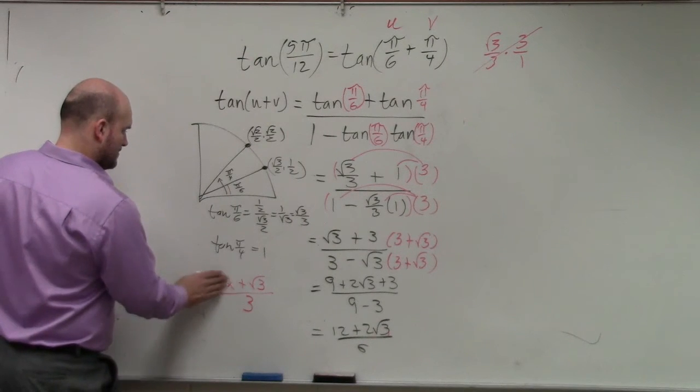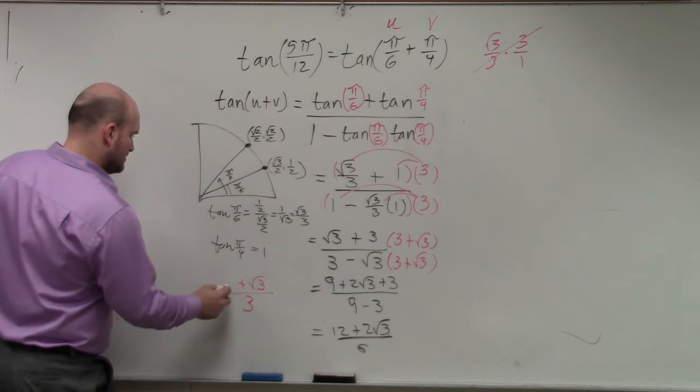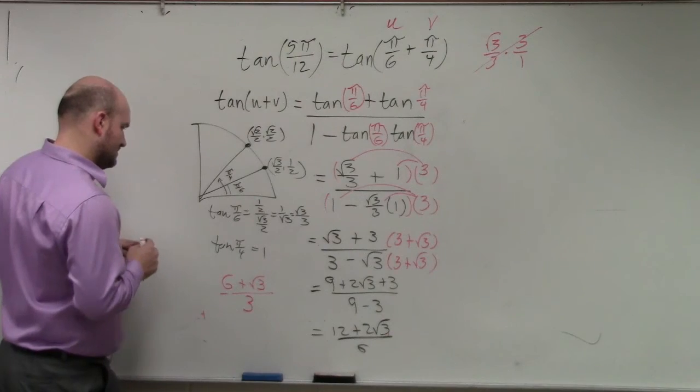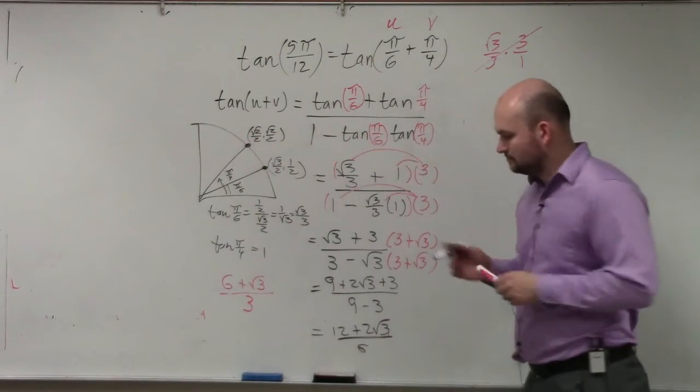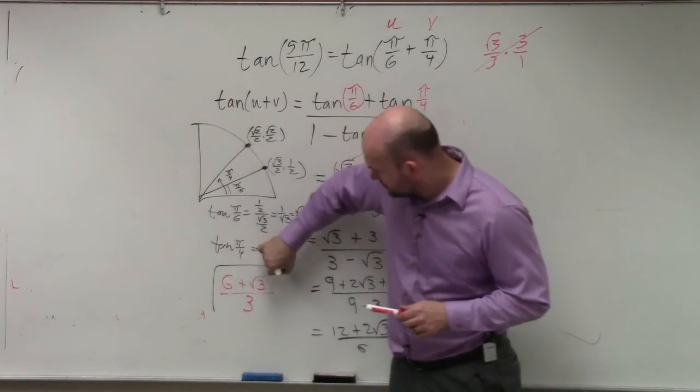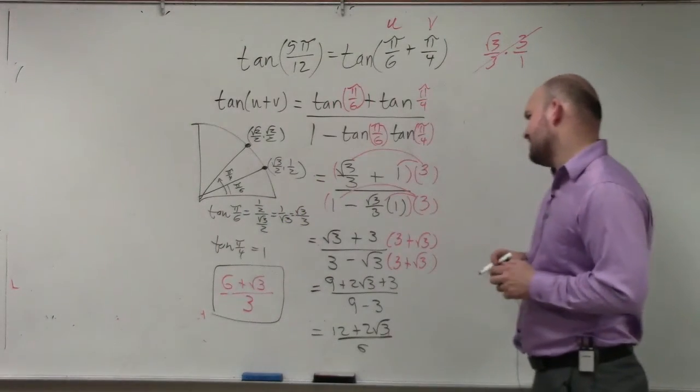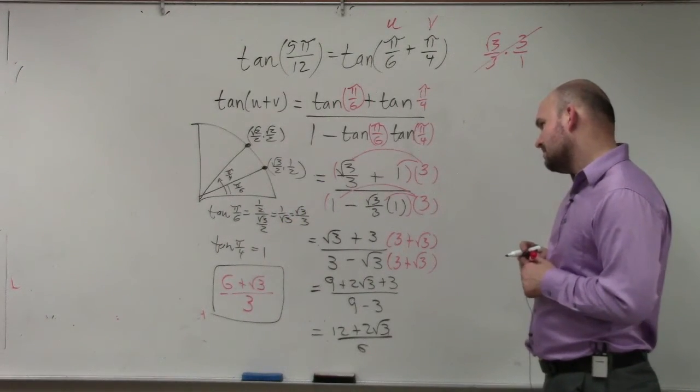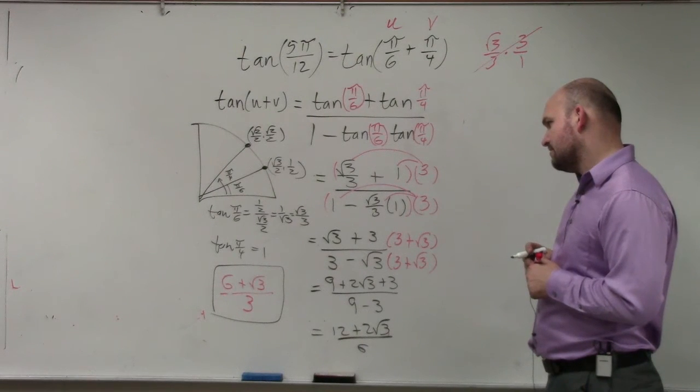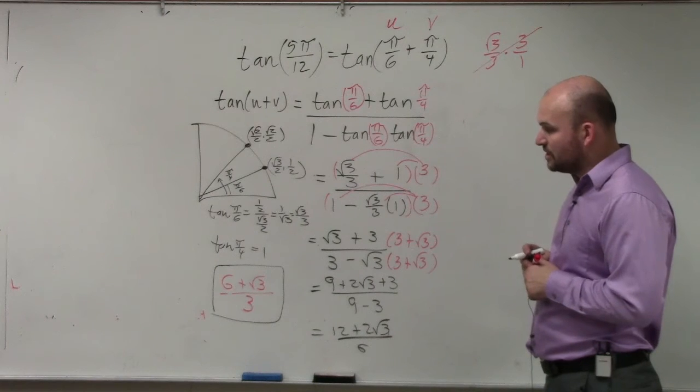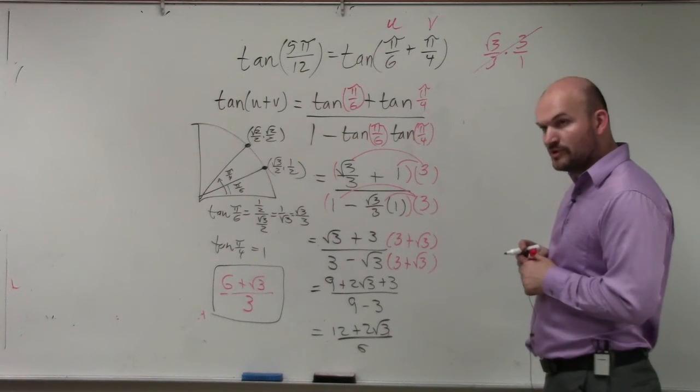That becomes a 6. And that would be your final answer. Assuming I did my math correctly. That's 9. This cannot be further divided, correct? You cannot further divide it. You could break it up. You could break it up into 2 plus square root of 3 over 3. You could do that if you wanted to.